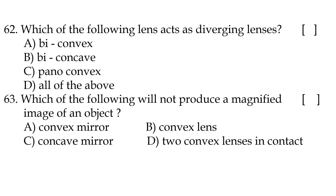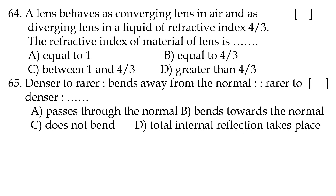Sixty-first question: which lens can form both real and virtual images? Option B, convex lens. Sixty-second question: which of the following acts as a diverging lens? Option B, biconcave lens. Sixty-third question: which of the following will NOT produce a magnified image? Convex mirror. Sixty-fourth question: a lens behaves as converging in air and diverging in a liquid of refractive index 4/3; the refractive index of the lens material is option C — between 1 and 4/3.